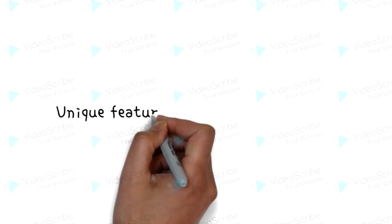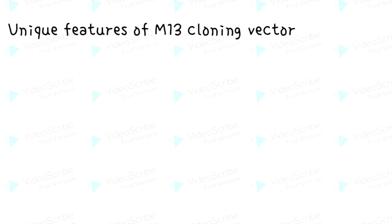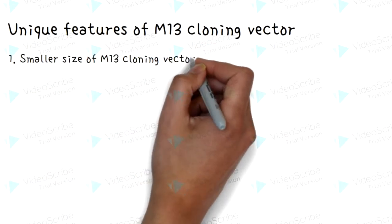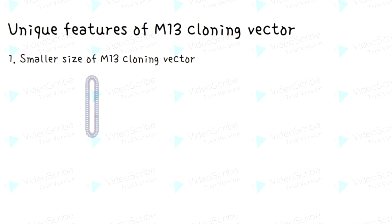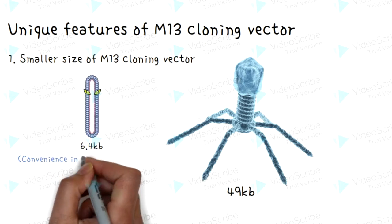Now let's talk about the unique features of the M13 cloning vector. Firstly, its smaller size. The M13 vector has a relatively small size of only 6.4 kb, while the lambda bacteriophage is 49 kb. The smaller size of the M13 vector offers convenience in terms of manipulation.